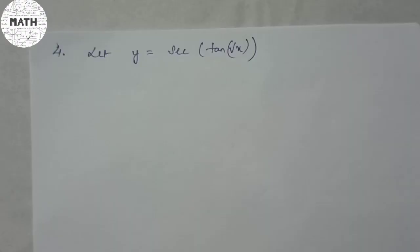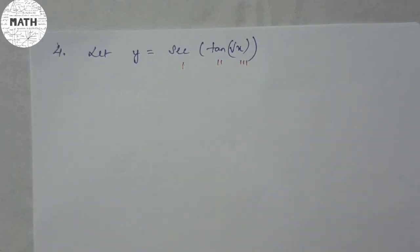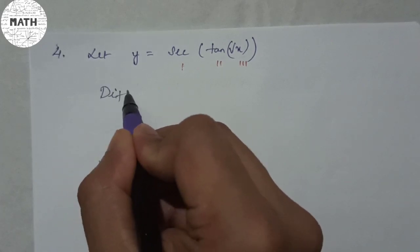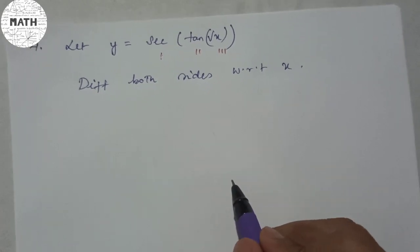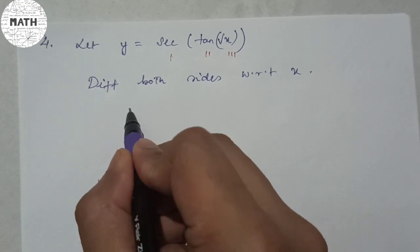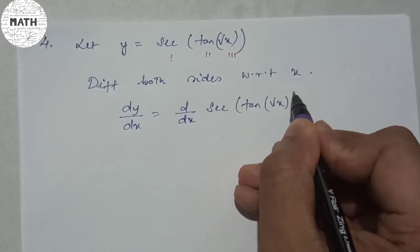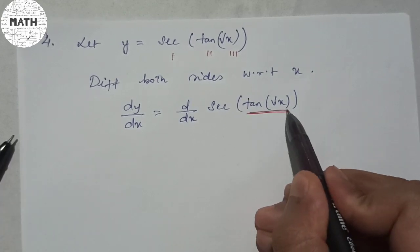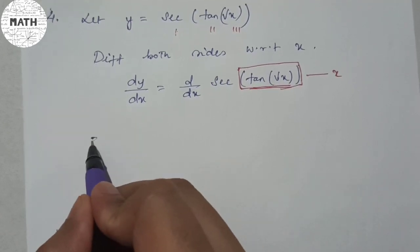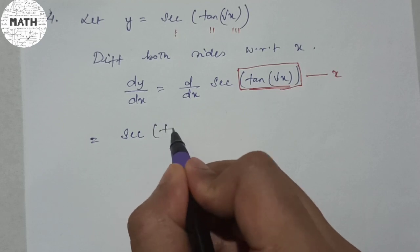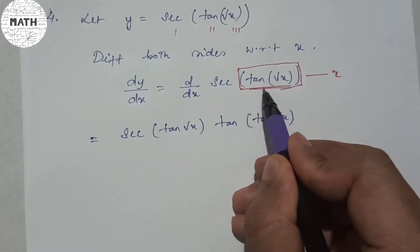Question 4: Differentiate sec(tan(√x)). There are three terms here, so we apply the chain rule three times. Differentiating both sides with respect to x: d/dx of sec(tan(√x)). Imagining the whole inner expression as x, d/dx of sec(x) is sec(x)·tan(x), so we get sec(tan(√x))·tan(tan(√x)), and we must differentiate the inner part once again.